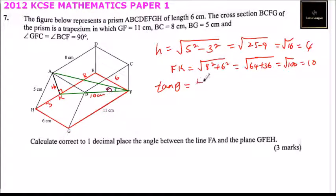So we say tan theta equals opposite, which is 4, over adjacent, which is 10, which equals 2 over 5. So we get tan inverse of 2 over 5. Use your calculator, and you will get 21.8 degrees.